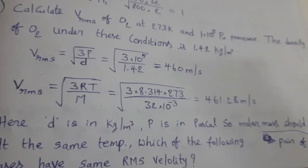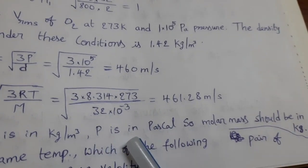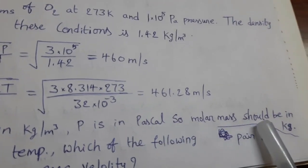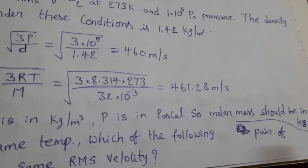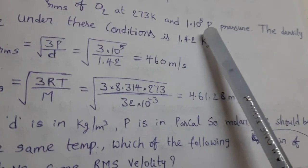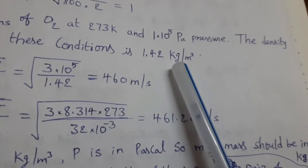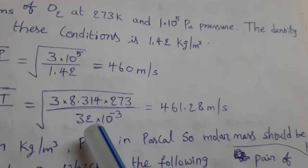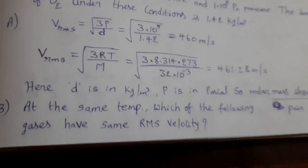Here D is in kg/m³ and pressure P is in Pascal, so molar mass should be in kilograms. Remember this condition: when pressure is given in Pascal and density is given in kg/m³, molar mass should be in kilograms.